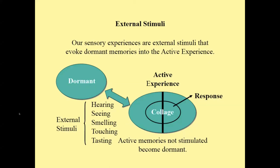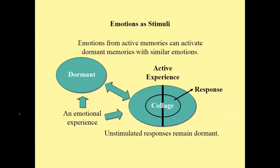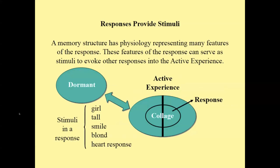Emotions of active memories can activate dormant memories with similar emotions. Emotions in the memory structures of dormant memories are similar to the active emotions in the active experience. Unstimulated responses remain dormant. Responses can also provide stimuli — a memory structure has physiology representing many features of the response, and these features can serve as stimuli to evoke other responses into the active experience. Responding to a girl with different qualities will evoke memories and thoughts about that girl and other girls. Both active internal and external stimuli and active responses and emotions serve to evoke dormant memories or responses with similar qualities into the active experience.